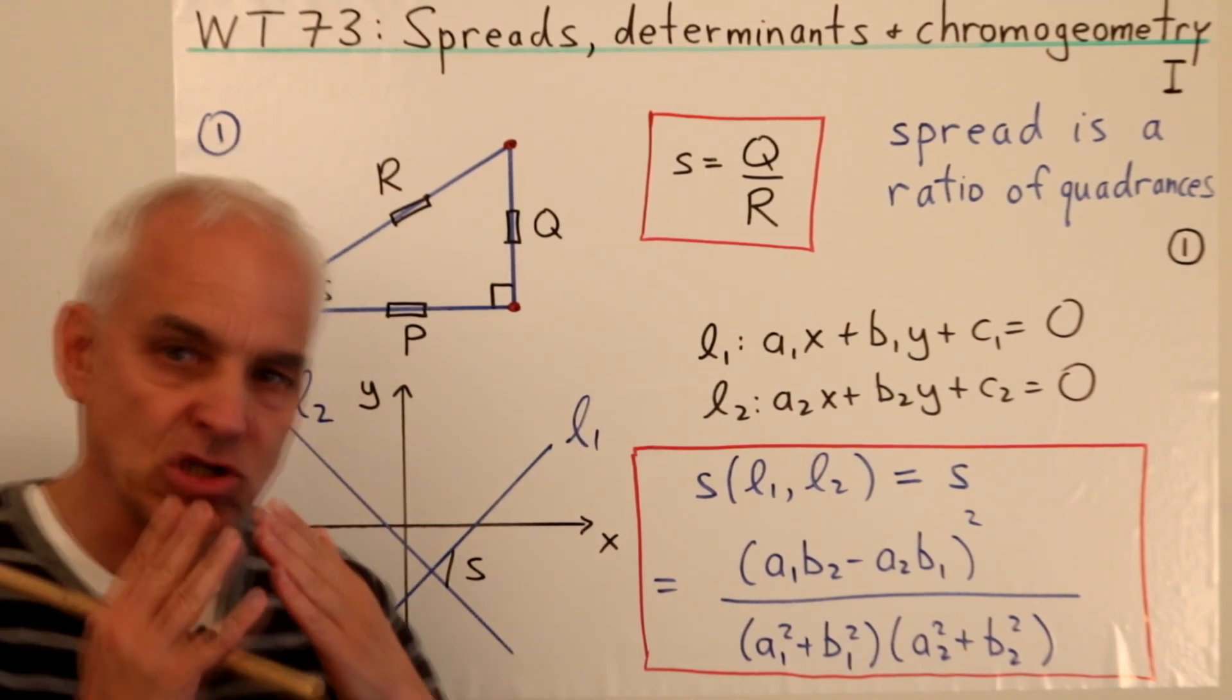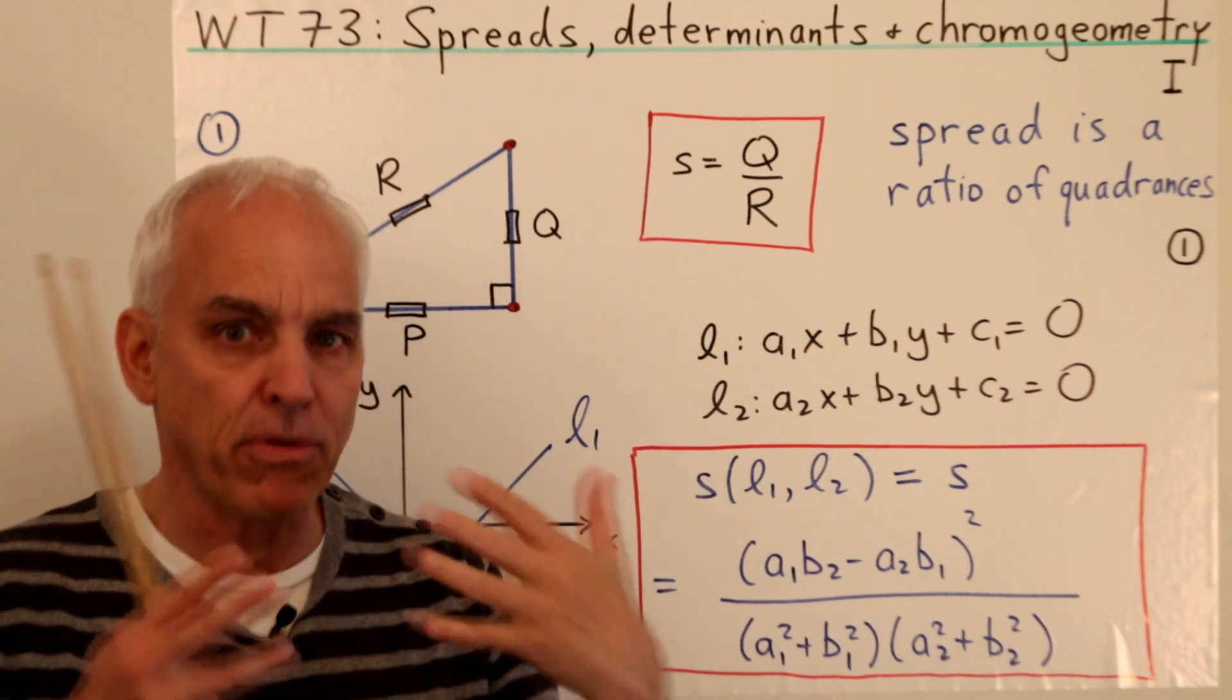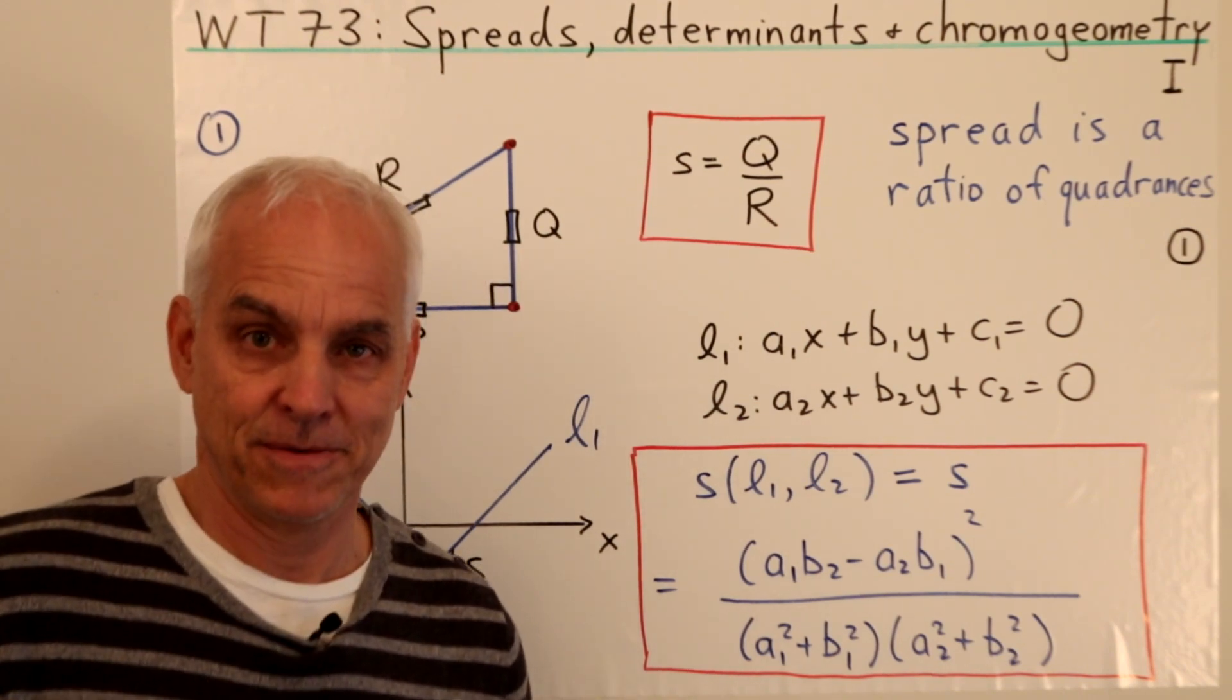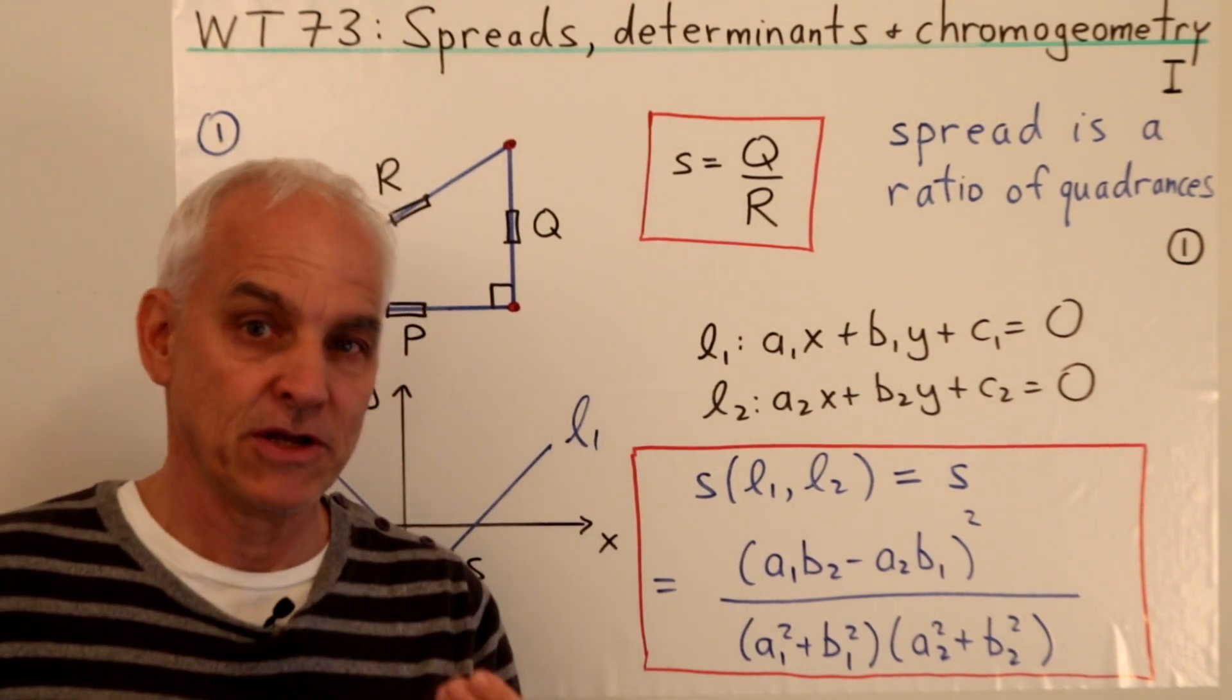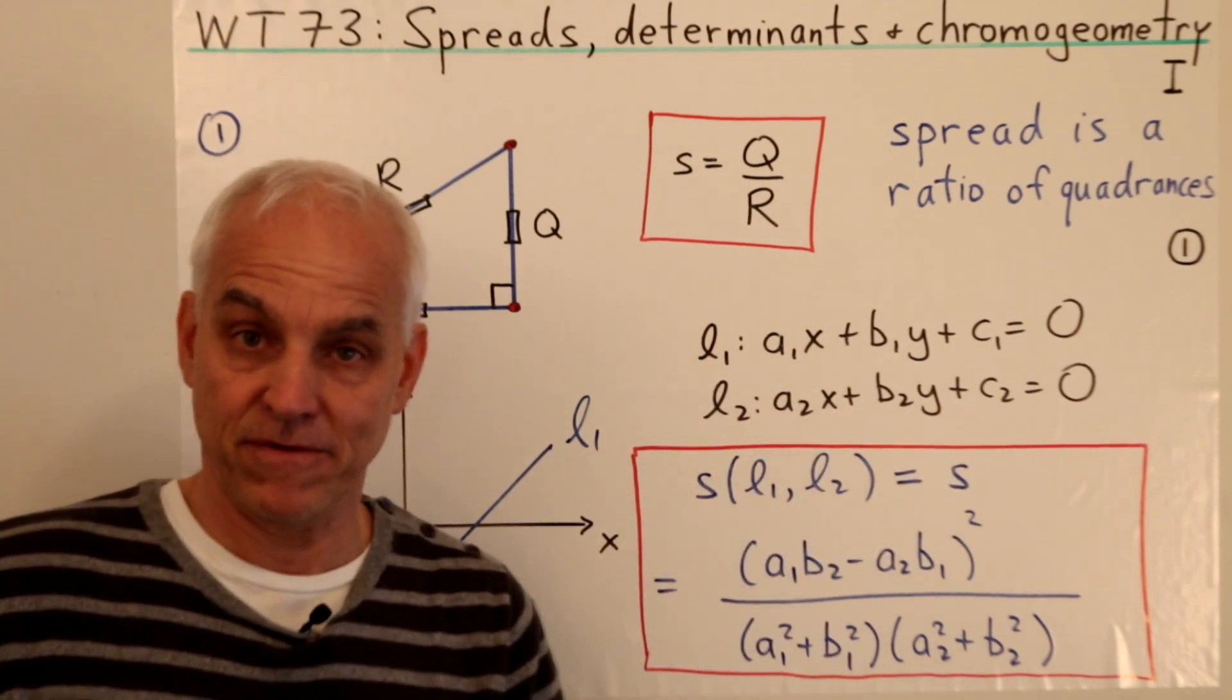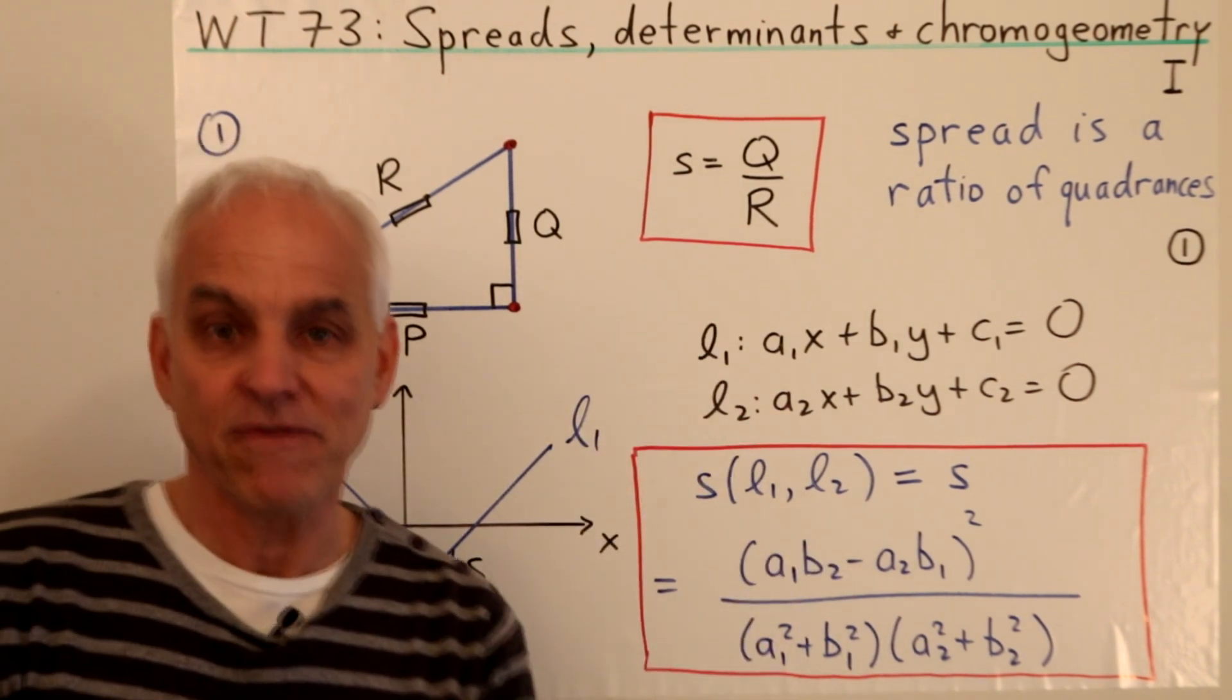And again, we see that it's algebraic. So if these things are rational numbers, then the spread is a rational number. We do not have to go outside our number system that we're using to describe points and lines in order to measure the separation between points and lines. That's a very novel idea if you're not familiar with rational trigonometry, but it's really at the heart of why this is such a powerful and in fact general notion. Because it applies no matter what kind of number system you have. Even if you have a finite field or some different kind of field, you can still establish these kinds of formulas.